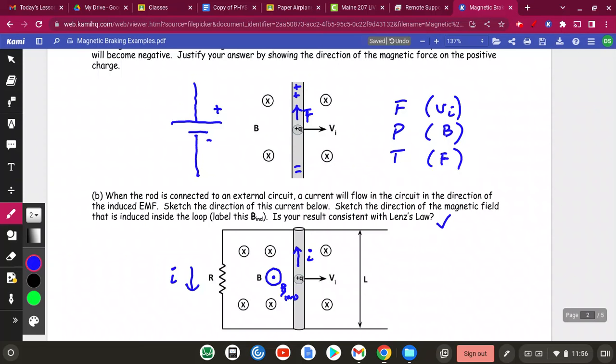Now that should not be a surprise to you because if you look at the picture above, you can see positive charges are being pushed up. So having a current that goes up, a positive current that goes up is sensible, right? So is our result consistent with Lentz's law? Yeah, heck yeah. In fact, I think I kind of use Lentz's law to come up with the result, which I would encourage you guys to do. Questions on that?